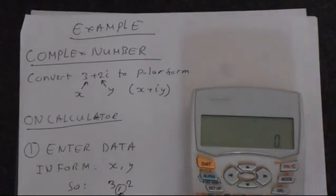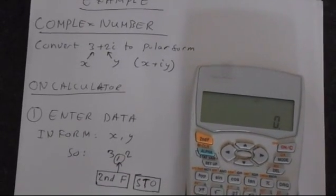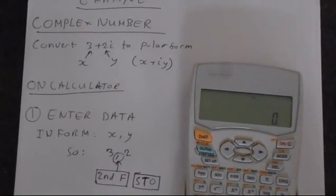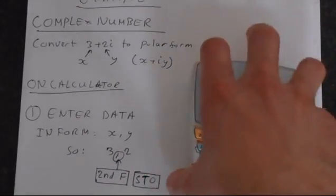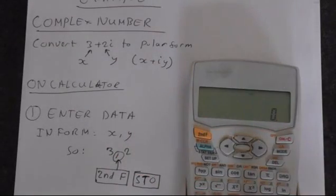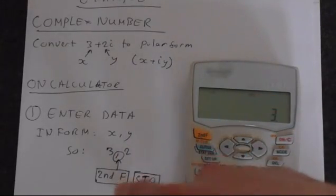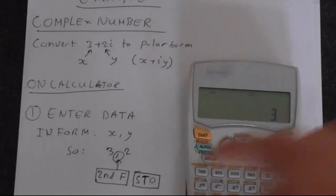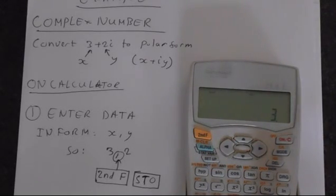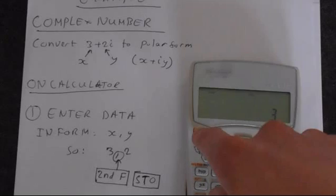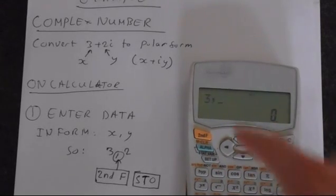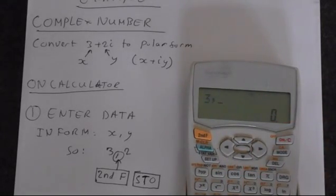The first step is to enter this data onto the calculator. We're entering x comma y. So we're doing 3, then second function, and then we want to get this comma function, and that's the orange function on top of STO. So pressing second function and then STO gets us a comma here, and then we're wanting 2. So just put 2 in like that.